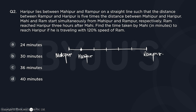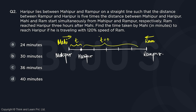Mahi and Ram start simultaneously from Mahipur and Rampur respectively. Ram reached Haripur three hours after Mahi. So if Mahi took t hours to reach Haripur, Ram took t plus three hours. We need to find the time taken by Mahi in minutes to reach Haripur, given that he travels at 120% of Ram's speed.